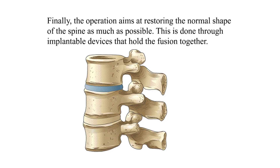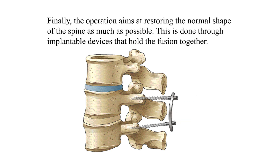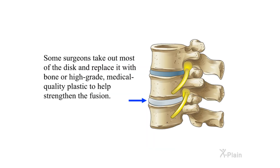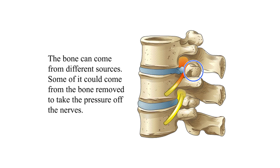The second objective is to stabilize the spine by fusing the vertebrae so they no longer slip with movement. Finally, the operation aims at restoring the normal shape of the spine as much as possible; this is done through implantable devices that hold the fusion together. Some surgeons take out most of the disc and replace it with bone or high-grade medical quality plastic to help strengthen the fusion.